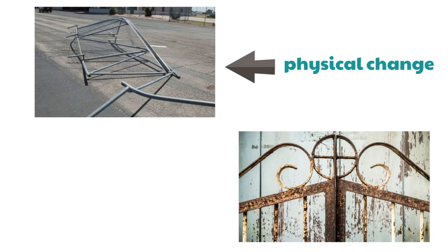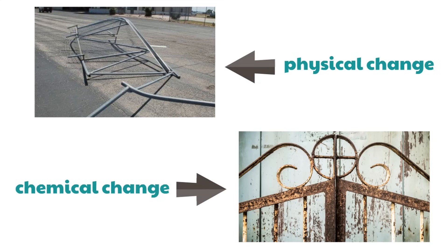Look at this gate — it looks all rusted. The gate has been rusted. Have you ever seen a gate like this? Now, the rusting — is that something that's a physical or a chemical change? It's a chemical change, because it's changed the type of matter.